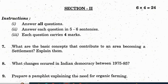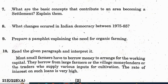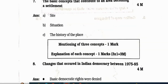We will see Section 2 now. 6 questions will be asked, 4 marks each, 24 marks total. No choice — you need to attempt all the answers. Question 7: what are the basic concepts that contribute to an area becoming a settlement? Explain them. The basic concepts are site, situation, and the history of the place. Mentioning 3 concepts: 1 mark. Explanation of each concept: 1 mark each. Total 4 marks.